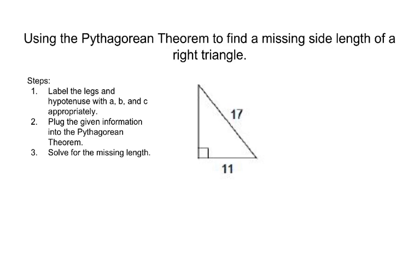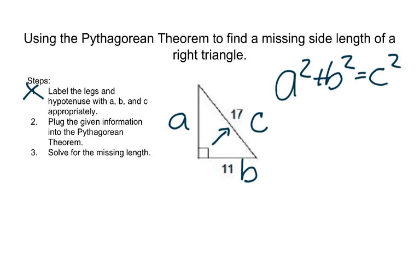Step one, label the legs and hypotenuse A, B, and C appropriately. I see that the hypotenuse is across from the right angle, so that's C, and then I can name my legs A and B, whichever one I want to. So, I'm going to call this side A and this side B. So, what I have is my B and my C, and now I'm going to plug those into my Pythagorean Theorem. I don't have A, so I'm going to leave it A squared, but I do have B, that's 11 squared, and I do have C, which is 17 squared.